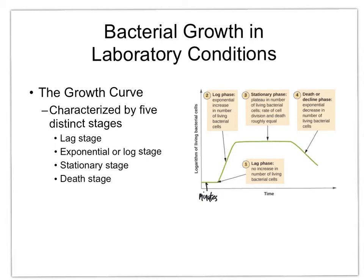Just due to the amount of resources available, the log phase cannot last forever. Even though when you were dropped in it looked like boundless, endless fields filled with everything you love to eat, now it's not just you — it's you and your 10 quadrillion friends. Within a few generations, suddenly all that boundless space is pretty filled up, all of that food has mostly been eaten, and there are waste products lying all over the place poisoning the environment, making it difficult to grow.